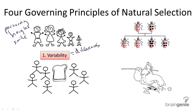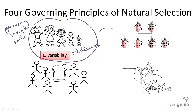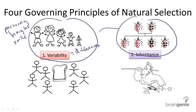He said that these differences that exist naturally in the population are also inheritable — meaning that these differences, like stripes or spots of ladybugs, or immunity to a disease, can be passed down from generation to generation.